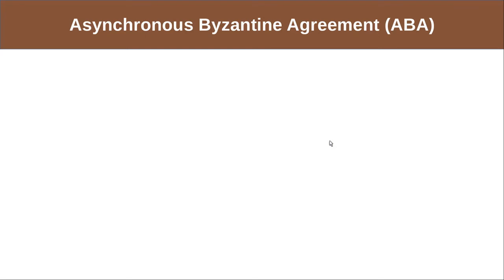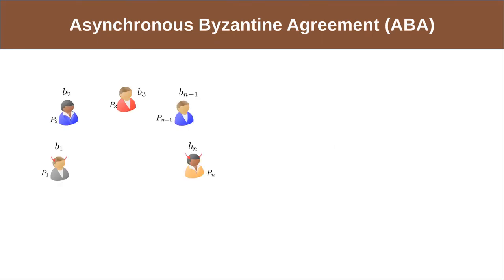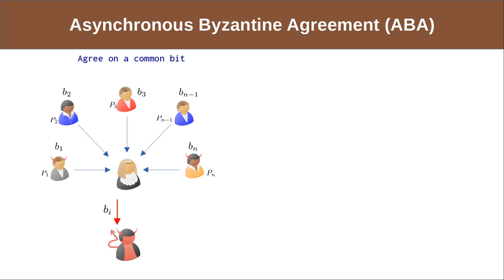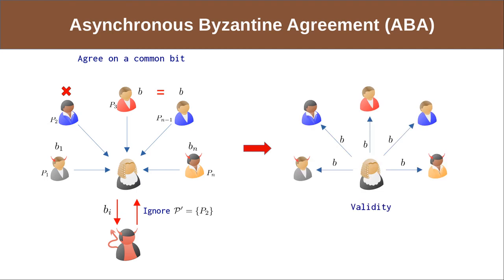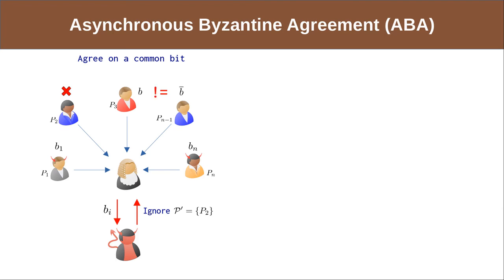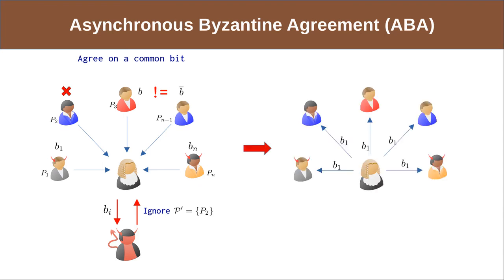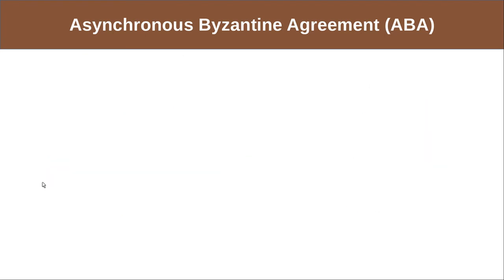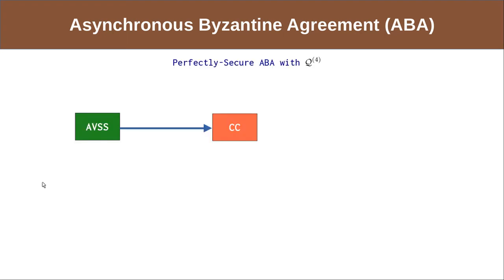Our MPC protocol uses an asynchronous Byzantine agreement protocol that realizes the following IDA functionality. There are N parties each having an input bit who would like to agree on a common bit. The trusted third party receives the inputs, sends them to the adversary since privacy is not a requirement, and the adversary specifies which honest parties to ignore due to asynchrony. If the considered honest parties all have the same input, that input is sent to all parties, capturing the validity property. Otherwise, the input bit of a corrupted party is sent, capturing the agreement property.